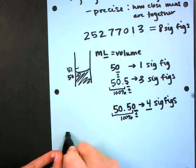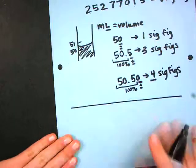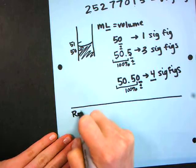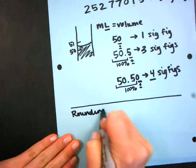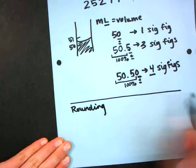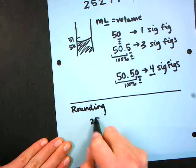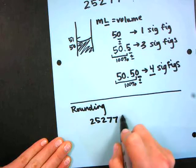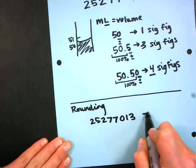And now I'm going to focus on rounding. So if I look at the number from the top I'm going to rewrite it: two, five, two, seven, seven, zero, one, three. And it had eight.